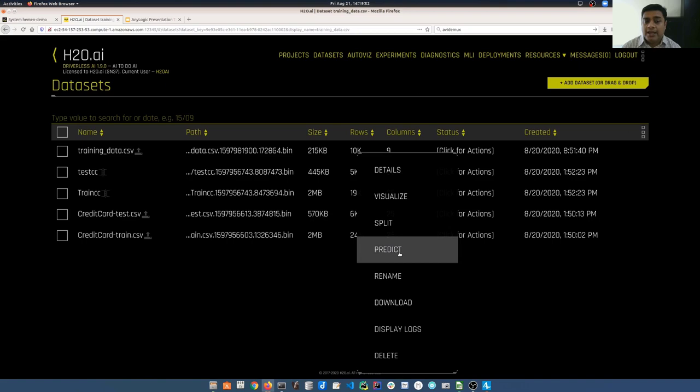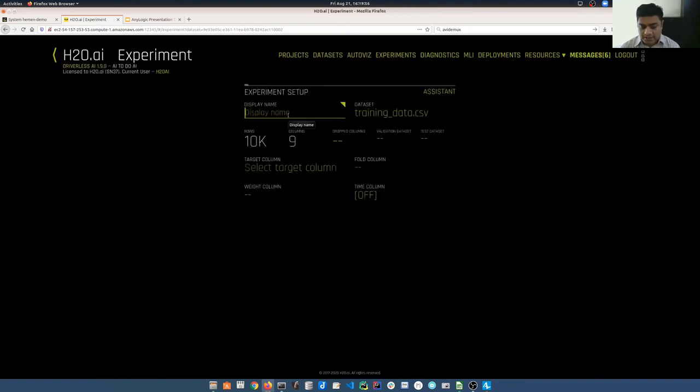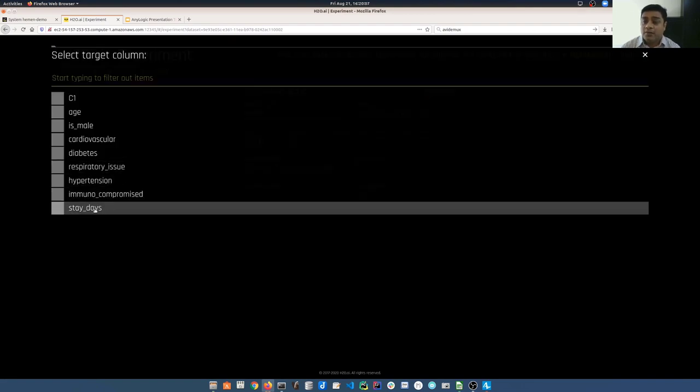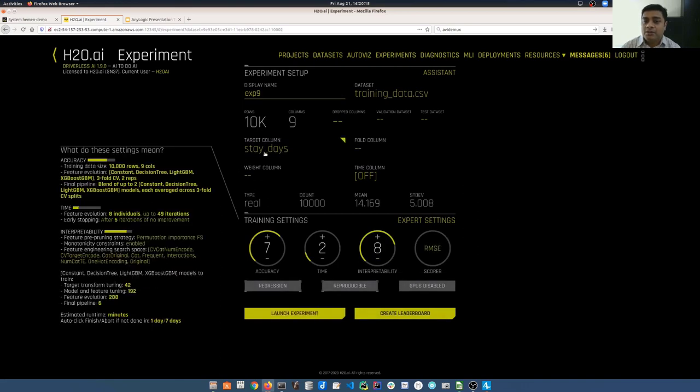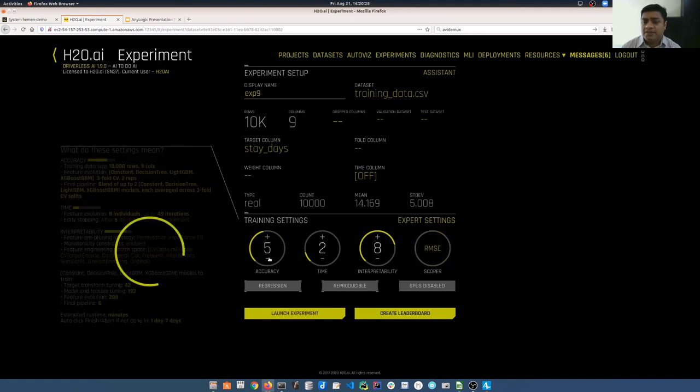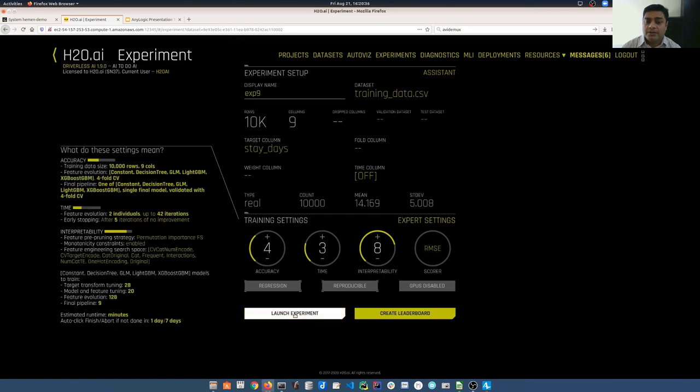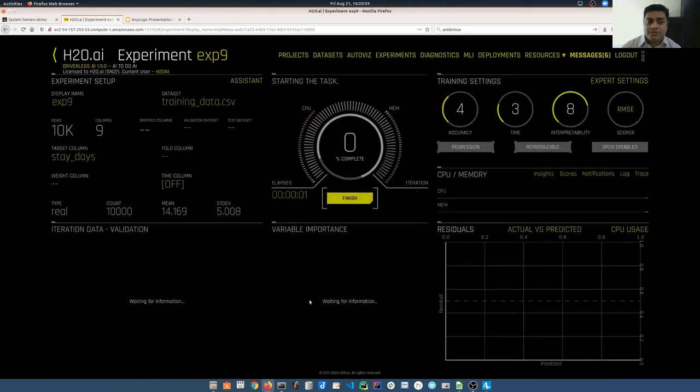Let's train an experiment on this training data set. To do that I will go ahead and click on predict. I'll give a name to the experiment. Let's call it experiment nine for example. I need to first select what is my target. What is it that I want to predict in this data and in our case it is the stay duration. So I select that. Driverless AI automatically determines that it is a numeric information. It is a numeric data set and hence it has determined that it's a regression problem and has selected appropriate score for it. Since I want to complete the experiment quickly I'm kind of reducing the accuracy and clicking the launch experiment.